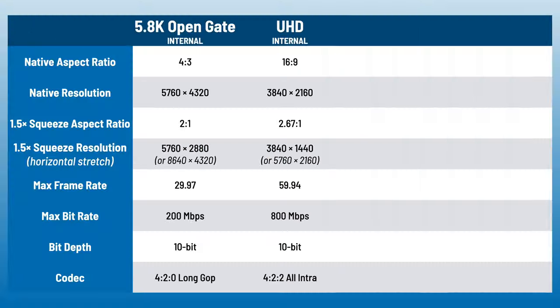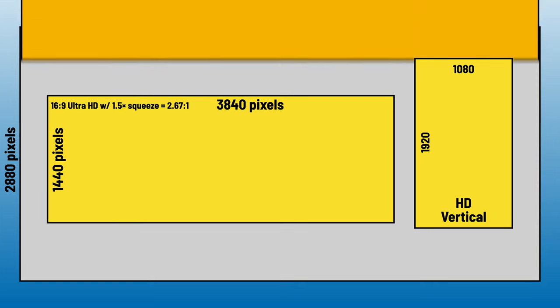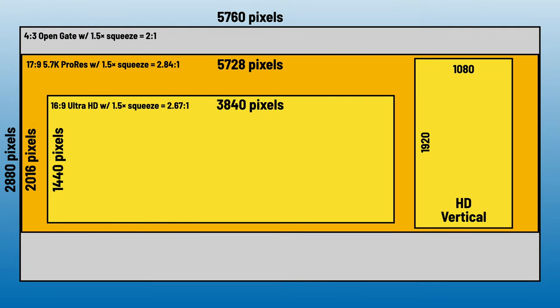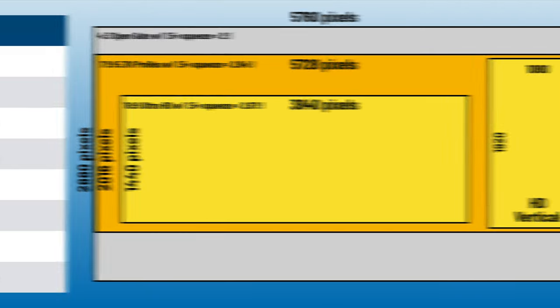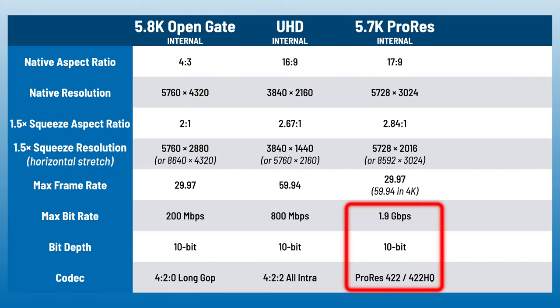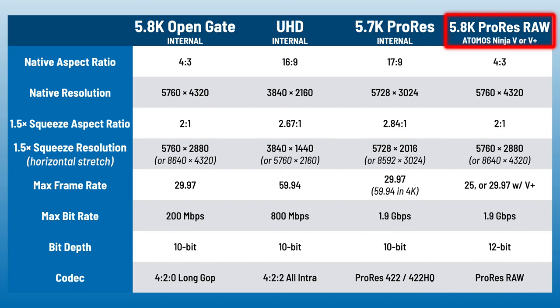But that's not the whole story. With the Lumix GH6, you can also shoot internally in 5.7K 17:9 ProRes. This is almost as wide as OpenGate, just not as tall. It's still big enough to get a full HD vertical crop, and of course it's higher bit rate and 4:2:2 color. So right now you're thinking: I want OpenGate but I want full quality too — why can't I have both? Actually, you can. If you add an Atomos Ninja V, you can record 5.8K 4:3 OpenGate in 12-bit ProRes RAW at 24 or 25p, or with the Ninja V Plus, up to 30p.